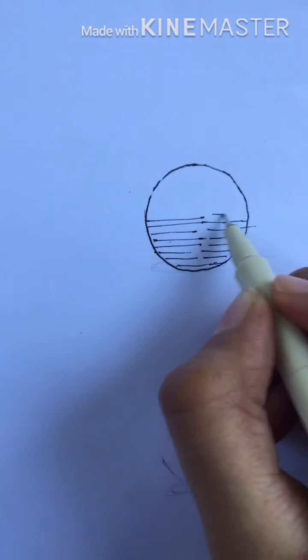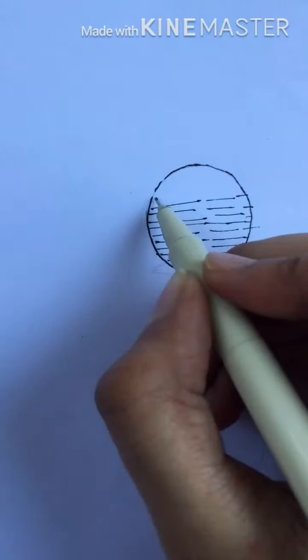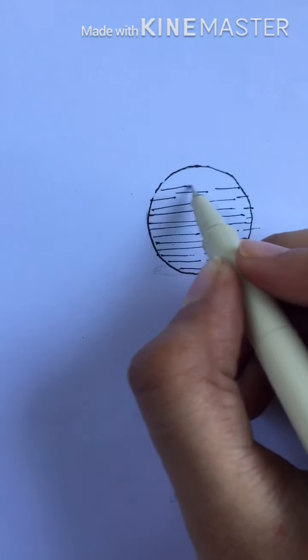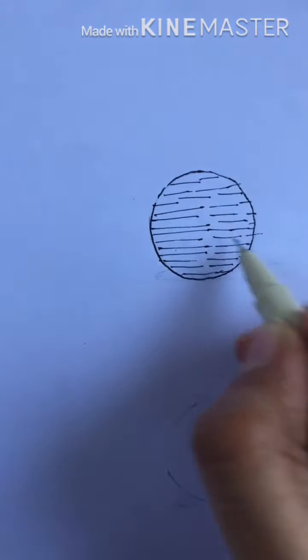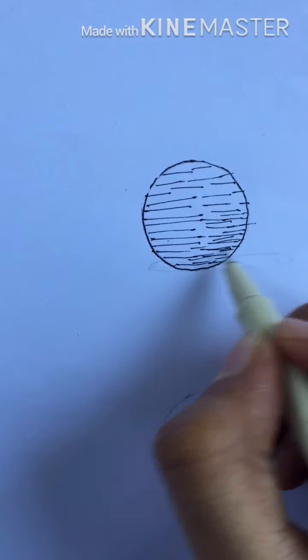This means the value will be darker on the lower right-hand portion of the sphere. To make the value darker, we will add more horizontal lines by placing the lines between the original lines that we draw.